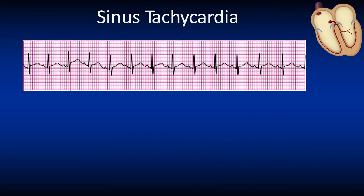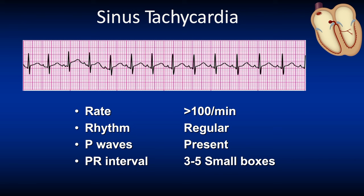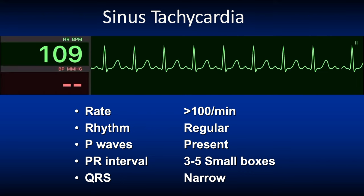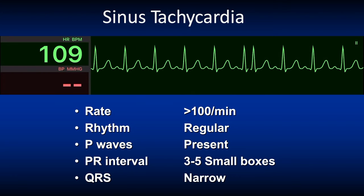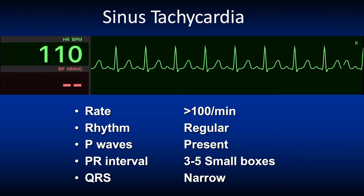Sinus tachycardia looks exactly like a normal sinus rhythm but the rate is above 100 beats per minute. The rhythm is regular, P waves are present, the PR interval is three to five small boxes, and the QRS complex is narrow. Sinus tachycardia can be caused by exertion, anxiety, pain, fever, anemia, hypovolemia and hypoxia, to mention a few. Here we see a sinus tachycardia at a rate of 109 beats per minute.